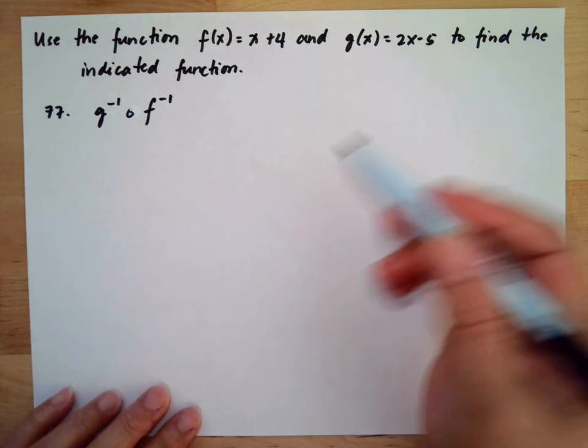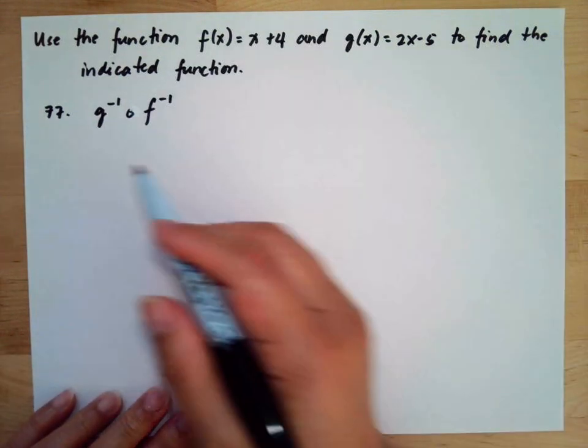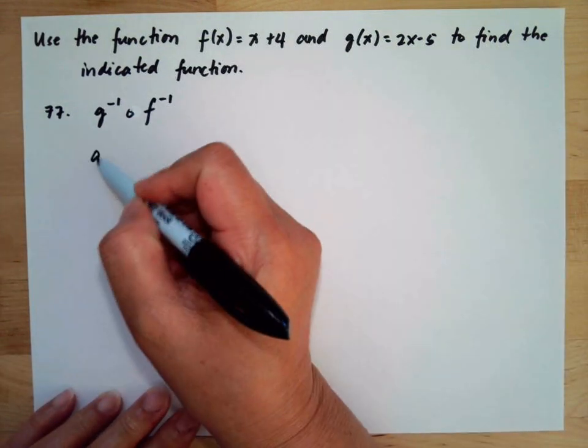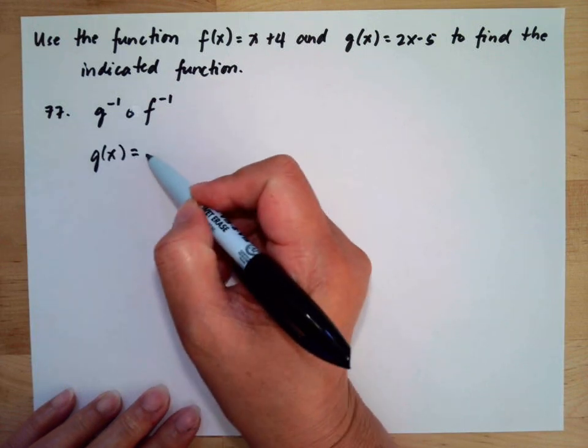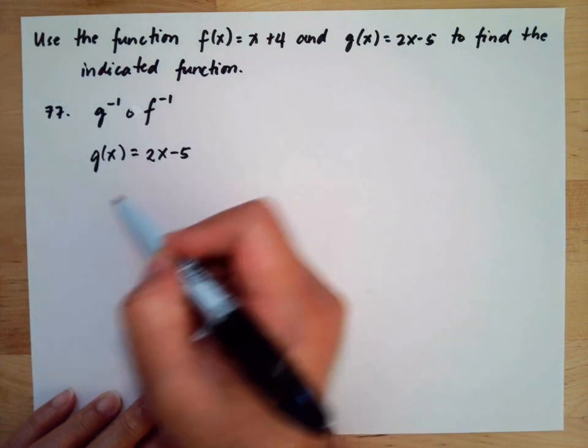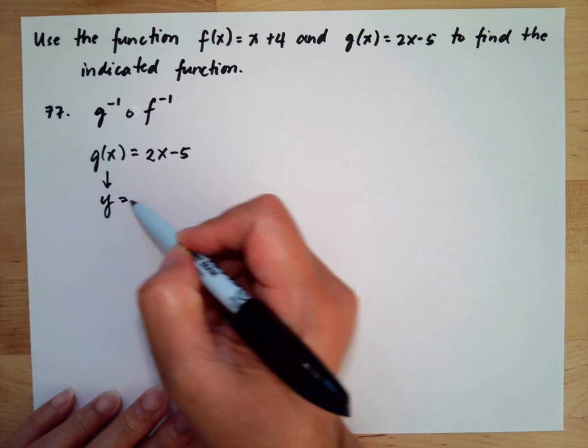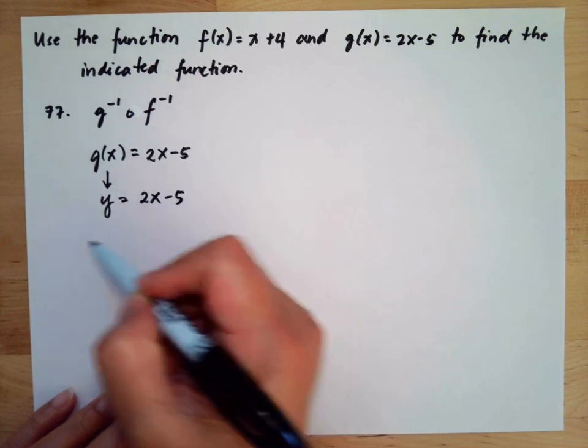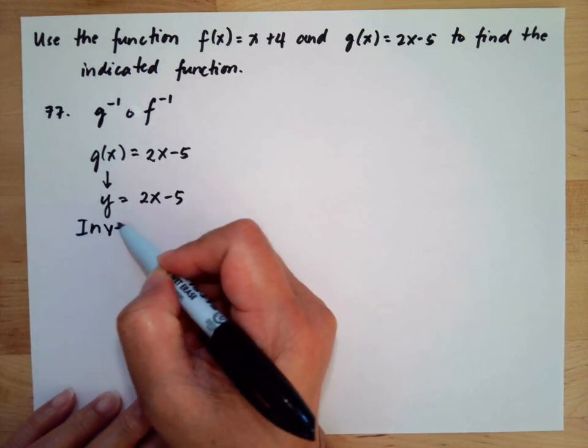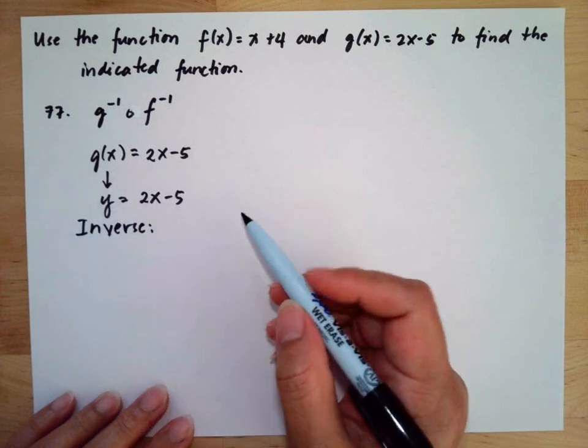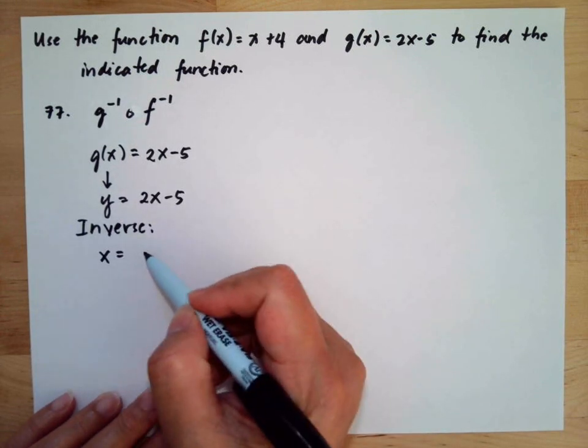We need to get the inverse of each function first. For g(x), we have 2x - 5. This would be y = 2x - 5. For the inverse, we need to change the y into x and the x into y, then solve for y.